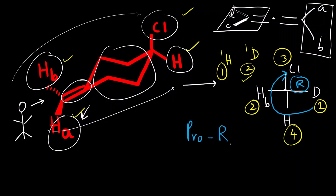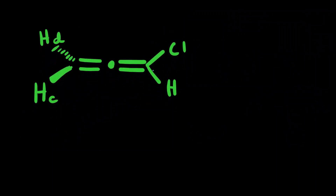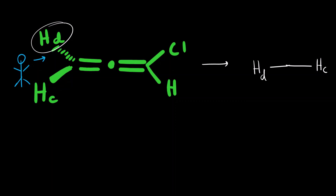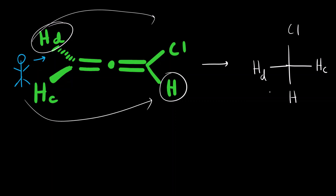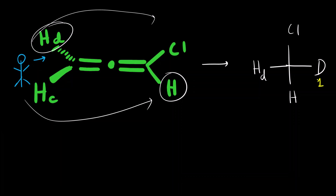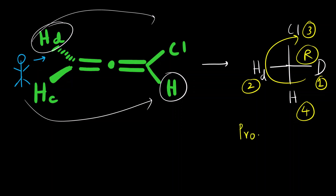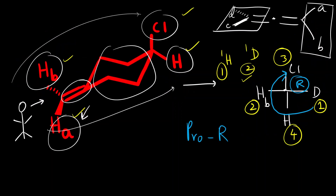Going from 1 to 2 to 3 is clockwise, so it is R configuration — meaning the pro-chiral center is pro-R. Similarly, for the second molecule (the allene itself), HC is on the right and HD is on the left; above is chlorine and below is hydrogen. We replace HC with deuterium and follow the same rules: deuterium gets priority 1, hydrogen gets 2, chlorine gets 3, hydrogen gets 4. The sequence 1→2→3 is again clockwise, so it is R — the pro-chiral center is pro-R.